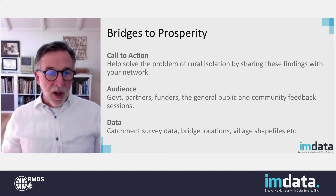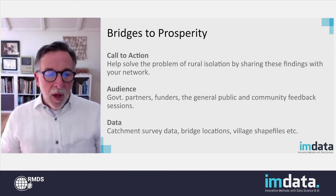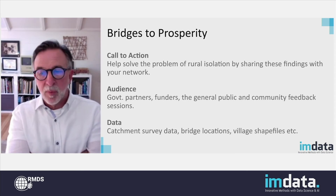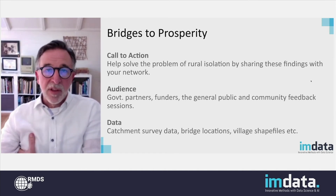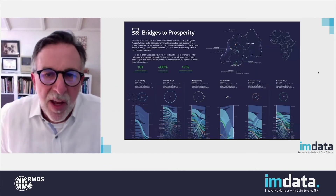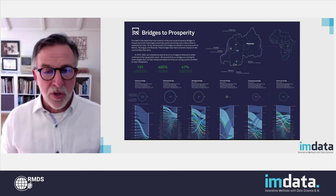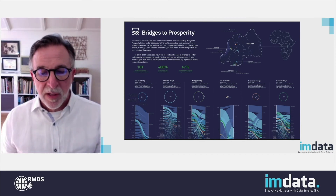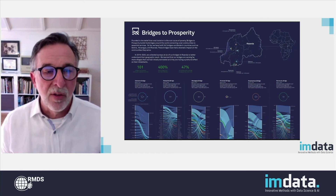Bridges to Prosperity is based in Rwanda, and they build foot bridges to connect communities in developing countries. The call to action was to help solve the problem of rural isolation by sharing the findings of our work with your network — with the people who are consuming it. The audience was government partners, funding organizations, the general public, and community feedback sessions. The data available included survey data related to catchments, bridge locations, and village shape files. It's not uncommon for us to combine geospatial data and some level of geospatial analysis with what we're doing, depending on the availability of the datasets.